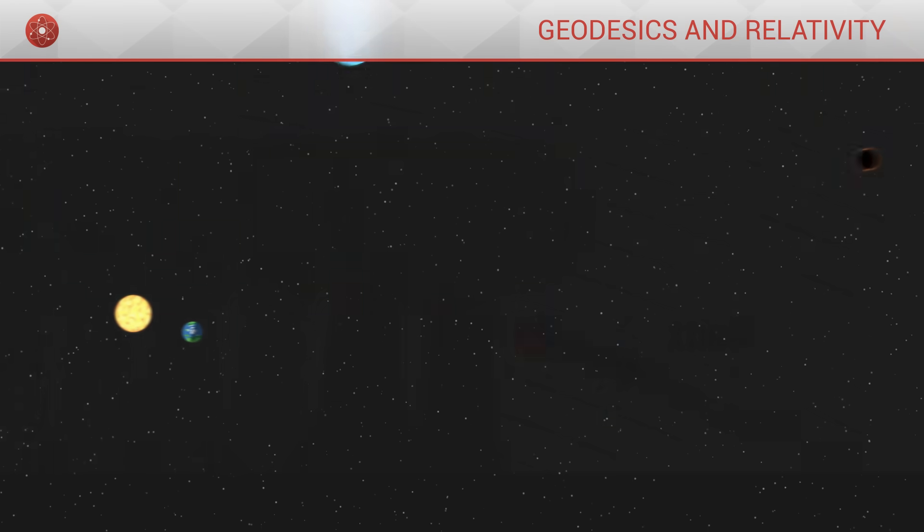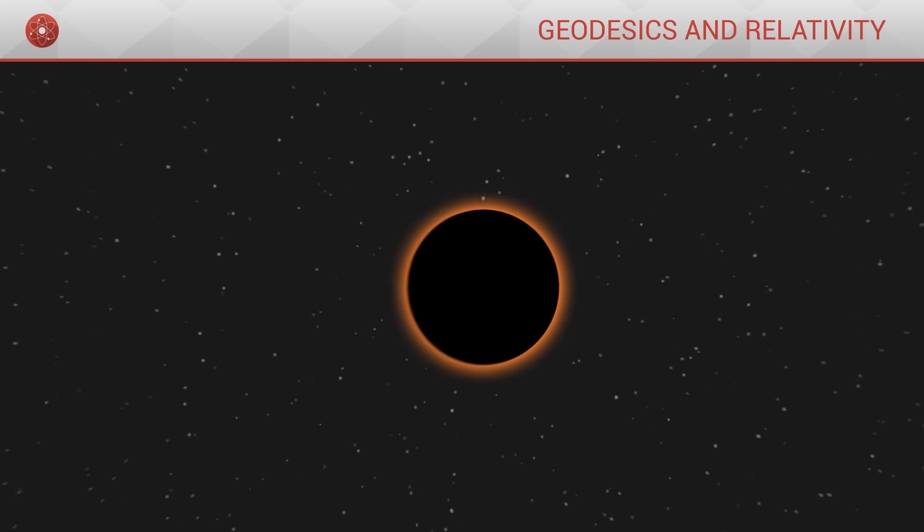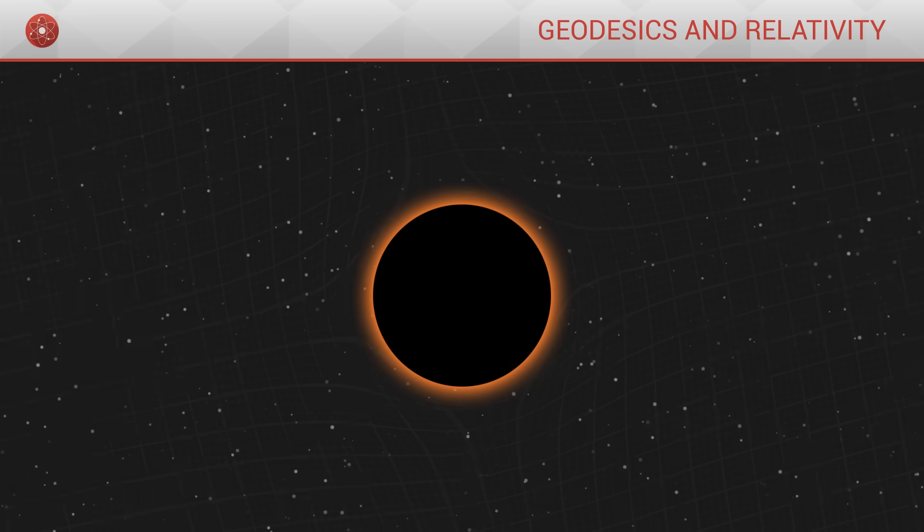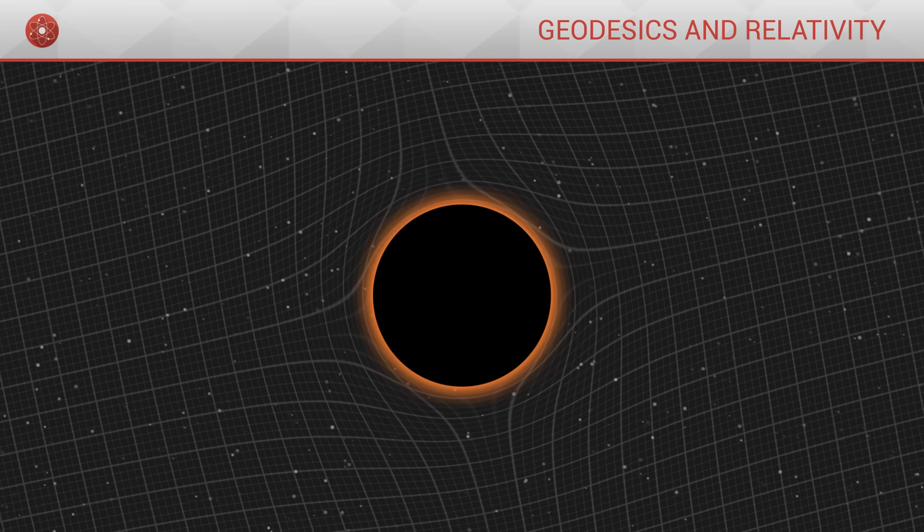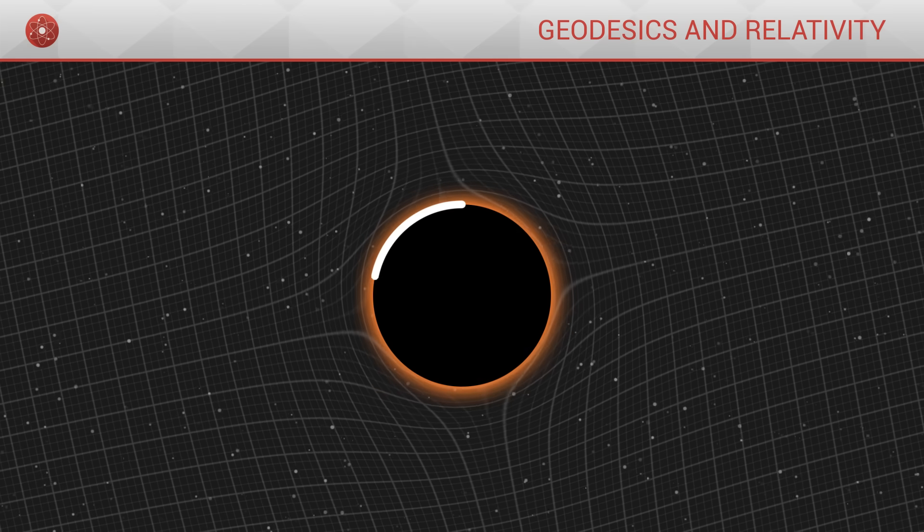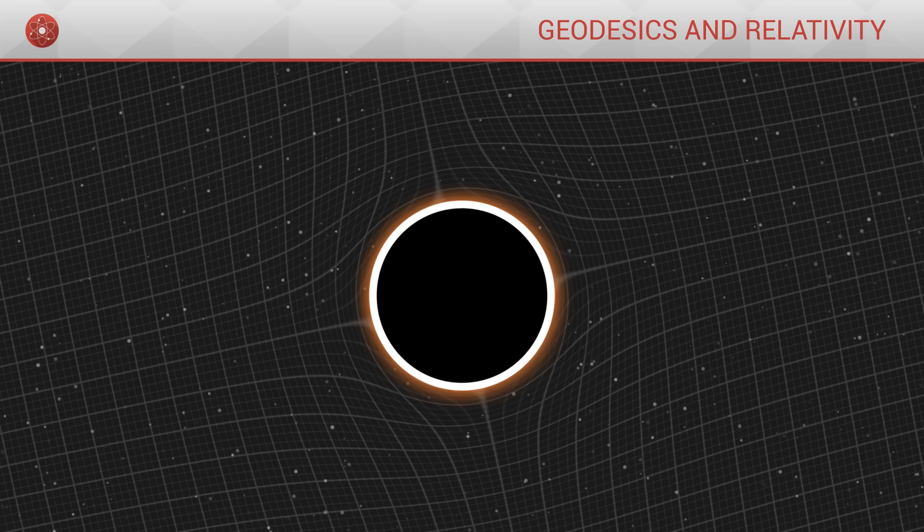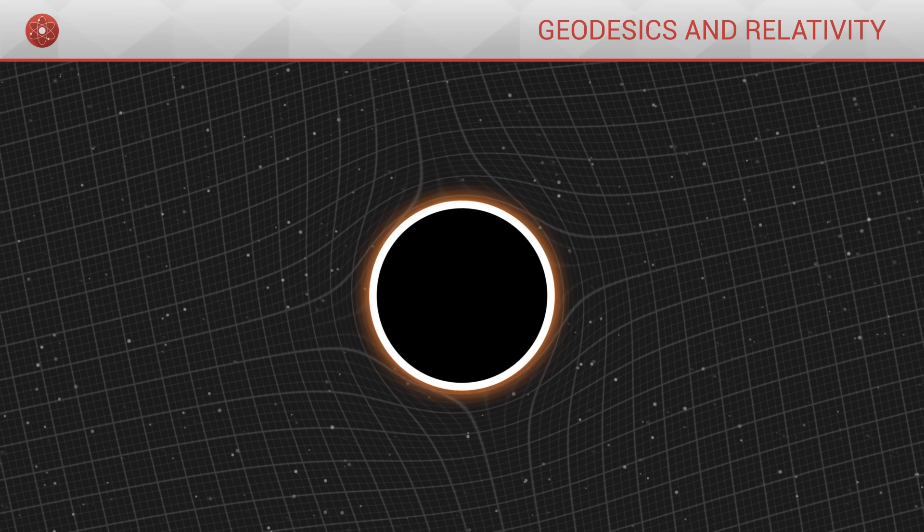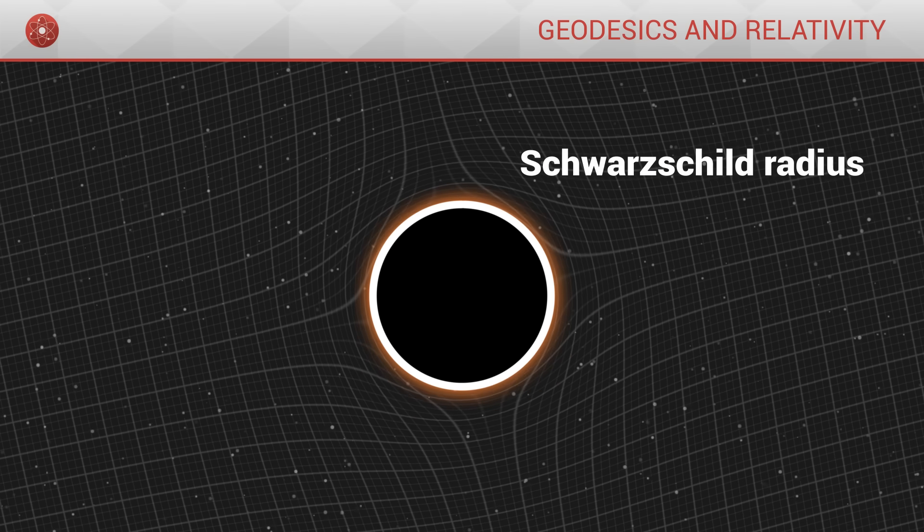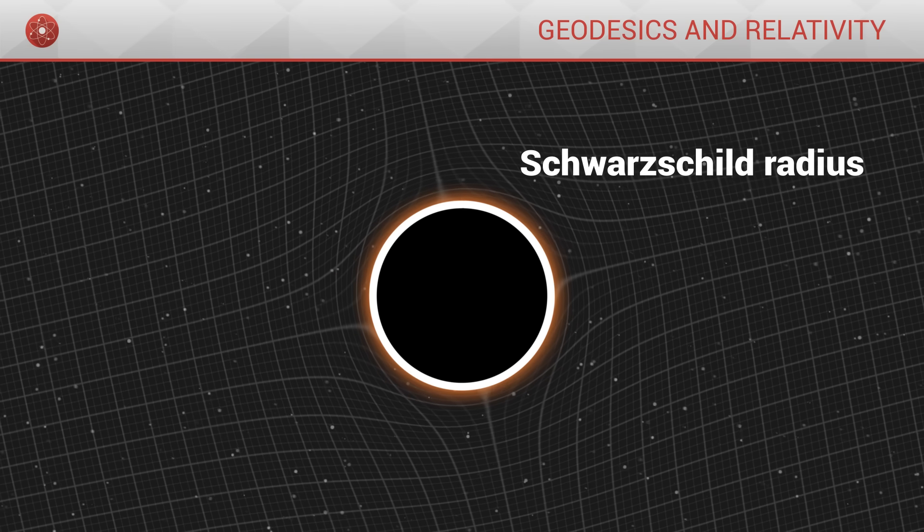When the attracting body is extremely massive, like a static black hole, the Schwarzschild metric describes a sort of hole. A spherical region of space, much like the hole in a funnel. The metric seems broken. This is called the Schwarzschild radius, or more commonly, the event horizon.